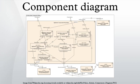In the Unified Modeling Language, a component diagram depicts how components are wired together to form larger components and or software systems. They are used to illustrate the structure of arbitrarily complex systems.